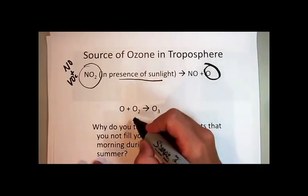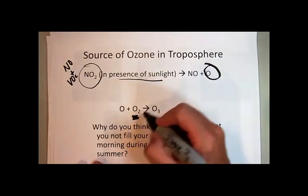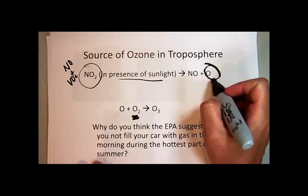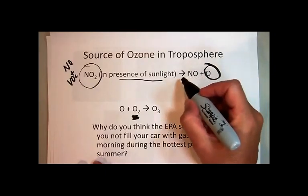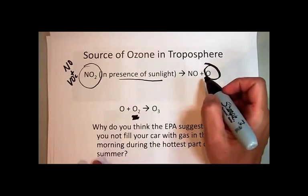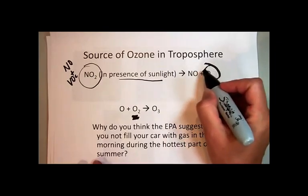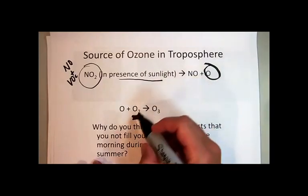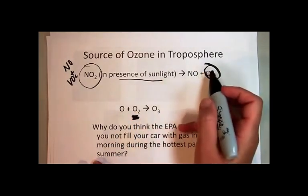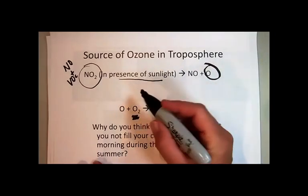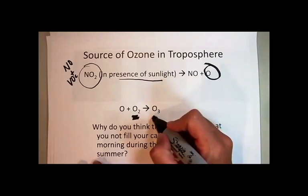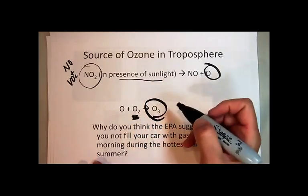Oxygen exists stably as O2. Oxygen by itself — a single oxygen atom — is very, very reactive. Since what's in the air mostly is nitrogen or oxygen, that oxygen atom is going to react very quickly with the molecular oxygen in the air, or with nitrogen to form more nitrogen oxide, giving us ozone as a result.